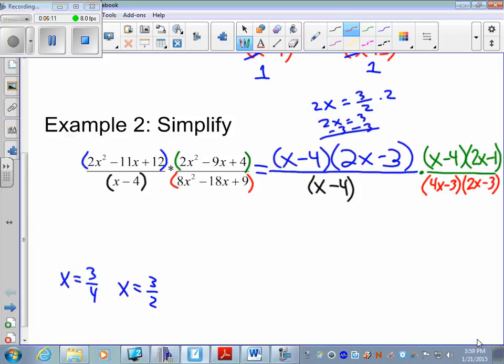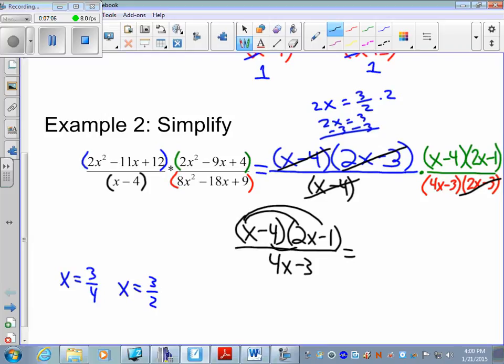After I factored everything, I look at numerator and denominator. No matter where they are, I'll look at similar numerators and denominators and cancel them out. x minus 4 divided by x minus 4, 2x minus 3 divided by 2x minus 3, they're equal to 1. Your final answer is x minus 4 times 2x minus 1 over 4x minus 3. On the test you might be asked to multiply out the numerator, but for our purposes that's good enough.